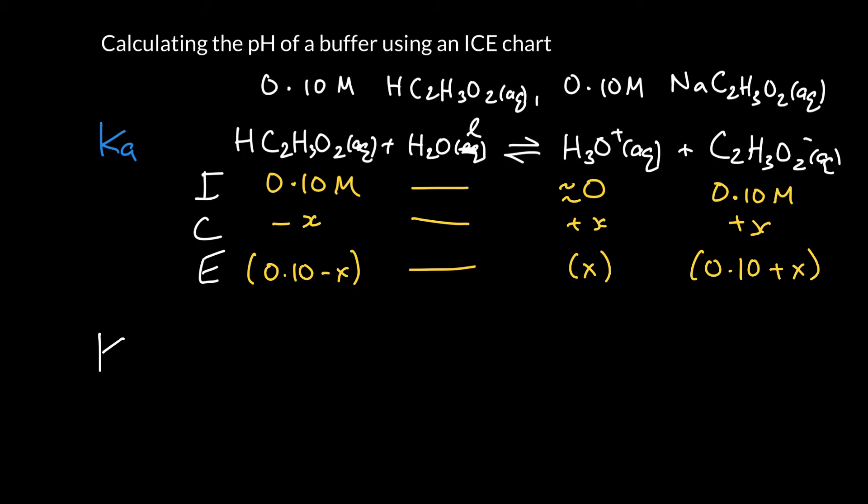Alright, so Ka for acetic acid. Well, we have to look that up, and I can look that up. It is 1.8 times 10 to the minus 5. And so that's equal to the concentration of products divided by reactants.